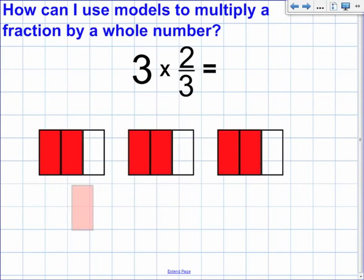So what we have here is two-thirds plus two-thirds plus two-thirds. We can also rearrange our fraction models to show that.